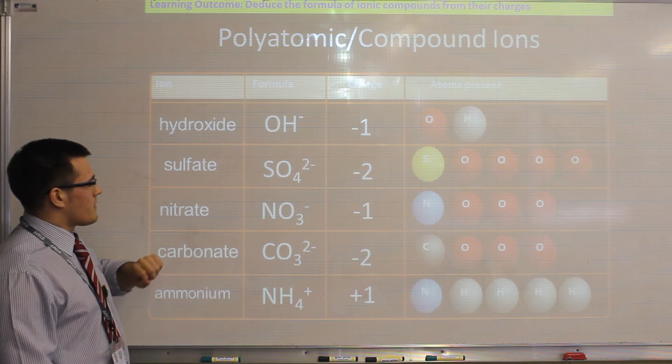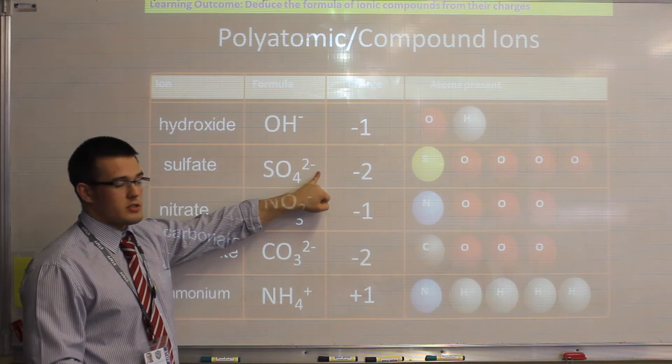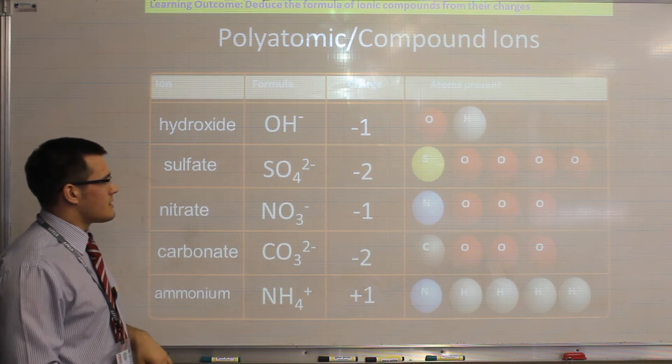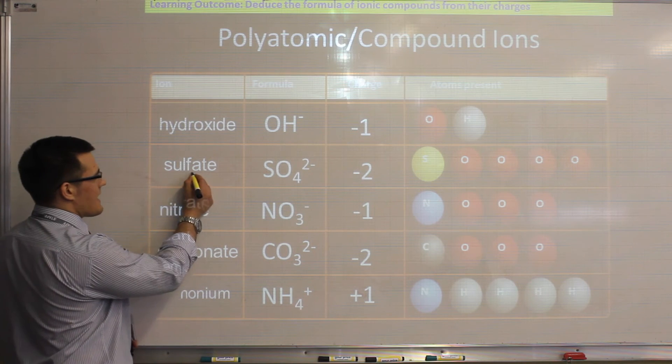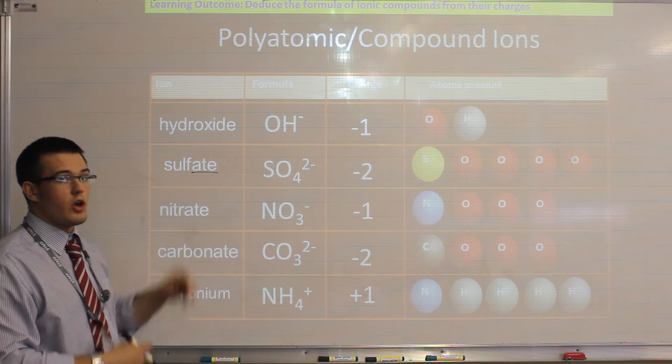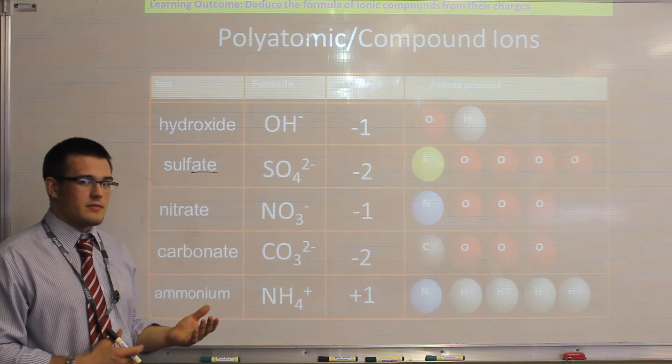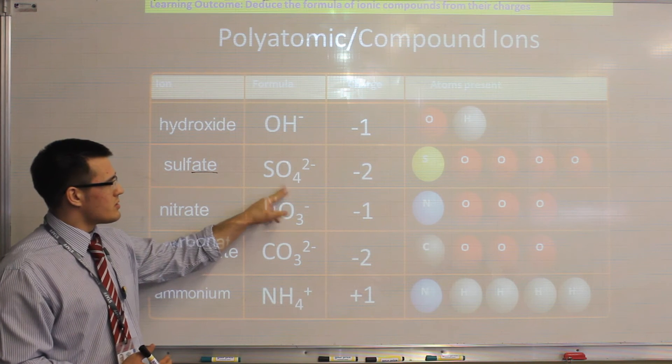The next one is sulfate. Now, the sulfate ion is SO4 2-, so it has a minus 2 charge. Now, to help you remember that, remember that -ate means the element, which in this case is sulfur, with oxygen. So think if it's like -ate, like mate. So its friend is oxygen, so it's always with oxygen.